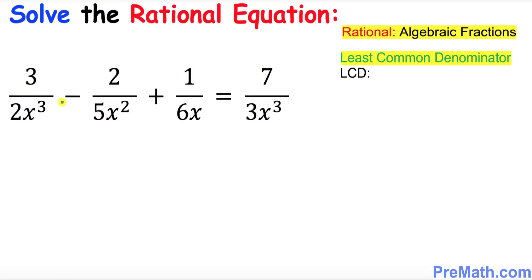In order to solve this rational equation, the very first step is to find the least common denominator. Focus on the denominators first. The coefficients at the bottom are 2, 5, 6, and 3. The least common denominator for 2, 5, 6, and 3 is simply 30.